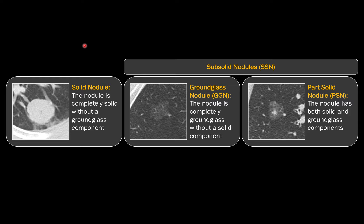Is the nodule solid or is it subsolid? A solid nodule is one in which the underlying lung parenchyma is completely obscured. A subsolid nodule can be of two kinds: one is completely ground glass, where the whole nodule does not obscure the underlying lung architecture, and the other is part solid, where some of the lesion obscures the parenchyma but there's also a ground glass component.